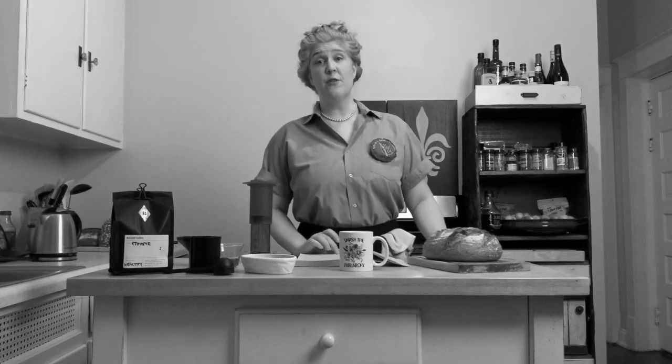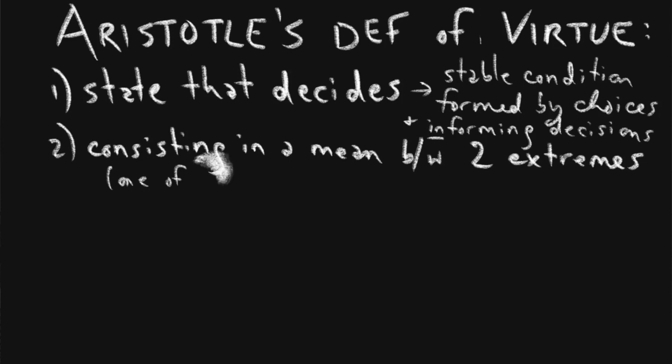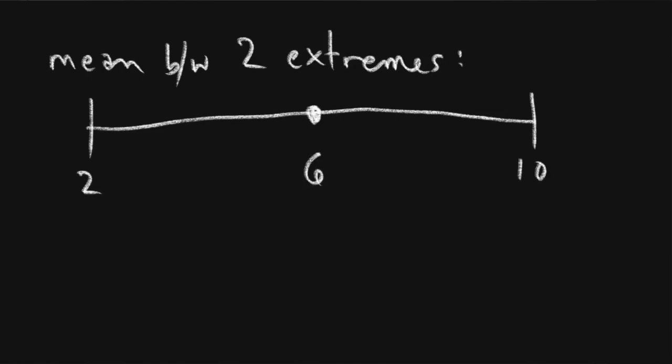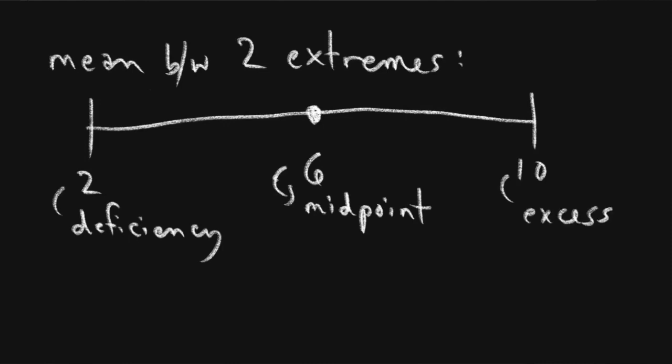Aristotle's second part of the definition sees it very differently. Instead, he says virtue is a state that decides consisting in a mean between two extremes. Just as the mean between two and ten is six — the midpoint — a virtue will always be a mean between an extreme of deficiency and an extreme of excess.